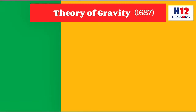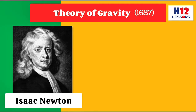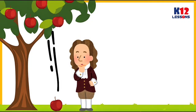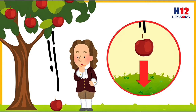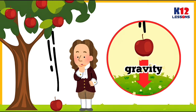The theory of gravity was proposed by Sir Isaac Newton in 1687 in his book Principia Mathematica. He saw an apple falling from a tree, and it got him thinking about the mysterious force that pulls objects to the ground. Newton named this mysterious force gravity.